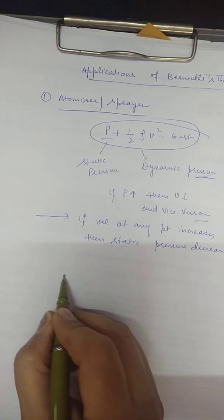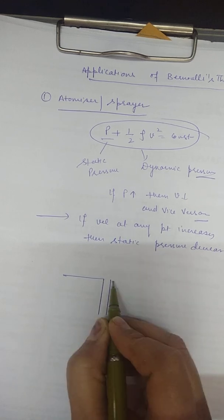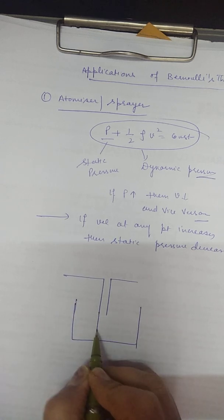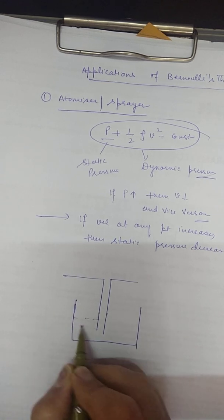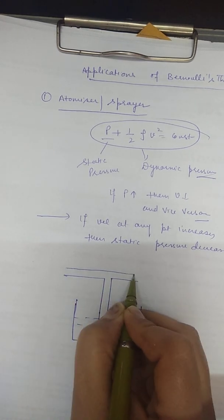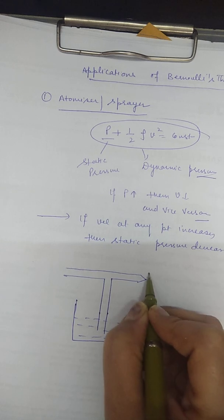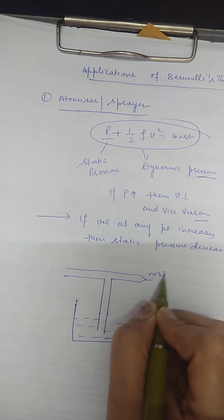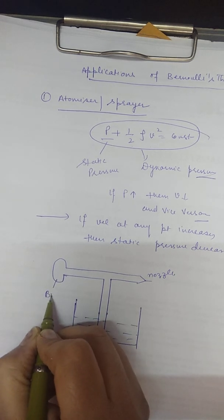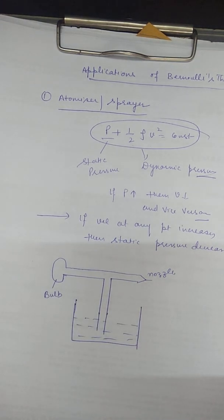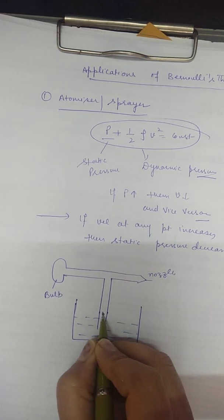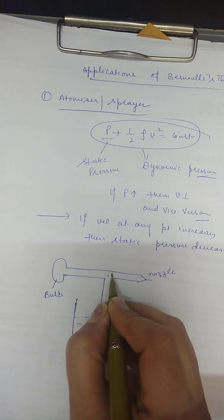All of you have seen this sprayer. In this, there is a pipe which is immersed in the liquid. And there is a tube connected to a nozzle through which the liquid comes out. You also have a bulb which you can squeeze. In equilibrium, the pressure at point A and point B are both equal to atmospheric pressure, since air is present at both points.